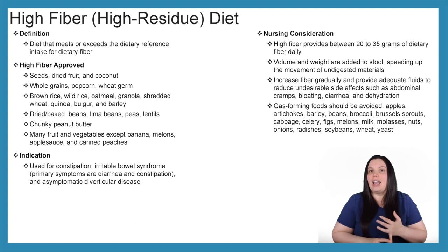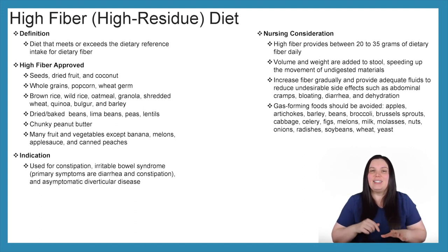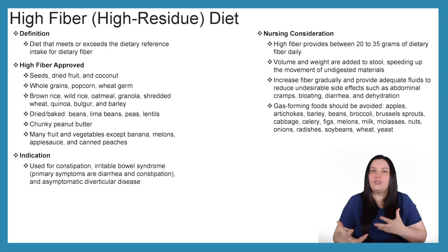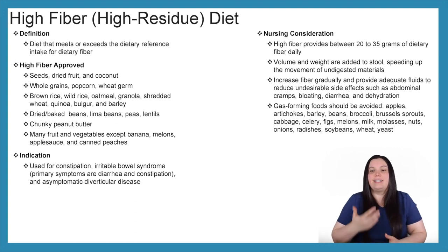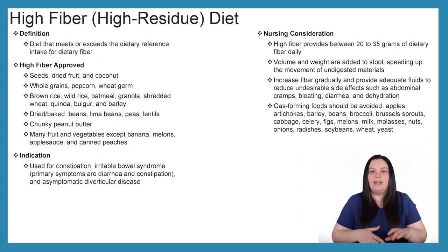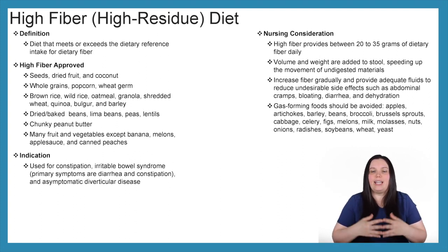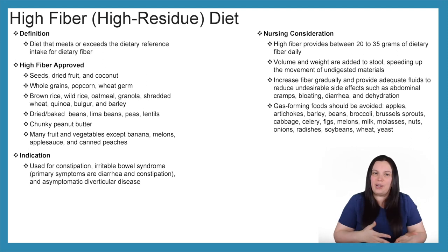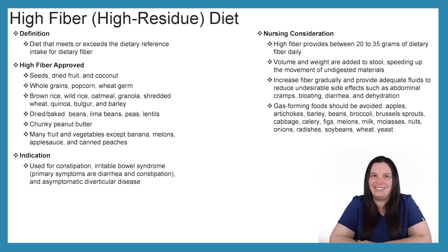Gas-forming foods to avoid on a high fiber, high residue diet include apples, artichokes, barley, beans, broccoli, Brussels sprouts, cabbage, celery, figs, melons, milk, molasses, nuts, onions, radishes, soybeans, wheat, and yeast.